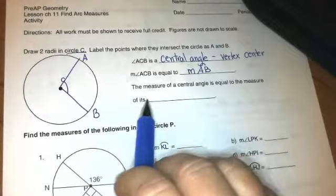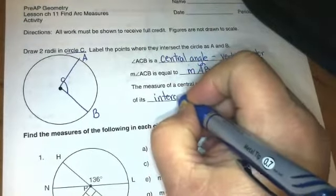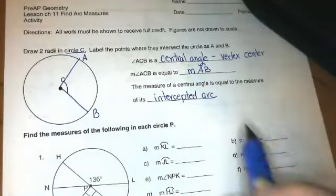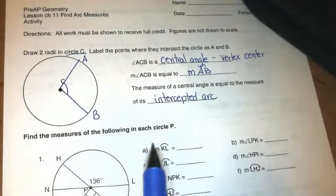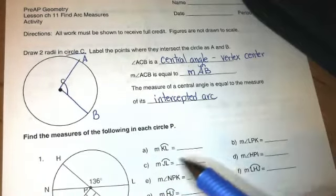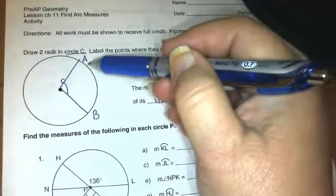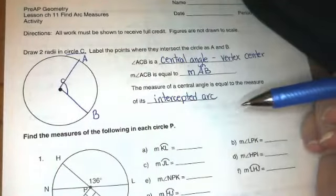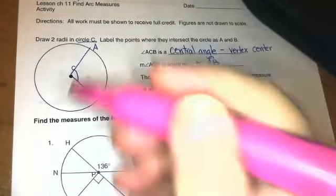So this angle right here has a measure that's equal to the measure of arc AB. So the central angle is equal to the measure of its intercepted arc. When we talk about measures of arcs, we're not talking about inches or centimeters, we're talking about degrees. So we're looking at arc AB saying how many degrees out of the entire 360 degrees does arc AB represent.